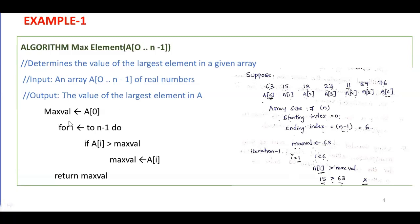First of all, we don't know which one is the largest element in the array. We assume that the first element is the maximum value. The logic is we compare that value with all the remaining elements in the array. If we find any number larger than our assumption, we exchange those numbers. We use a for loop that runs from 1 to n minus 1, because the 0th index element is taken as the maximum by assumption.